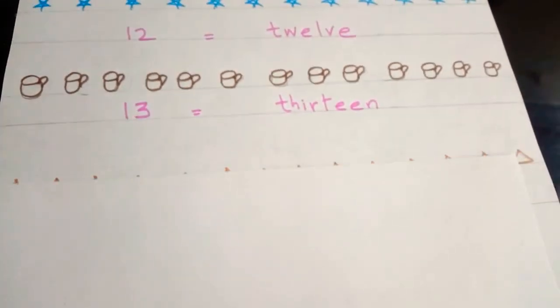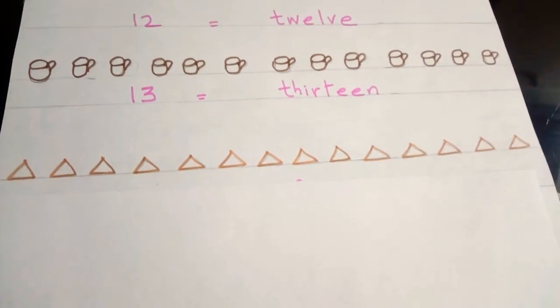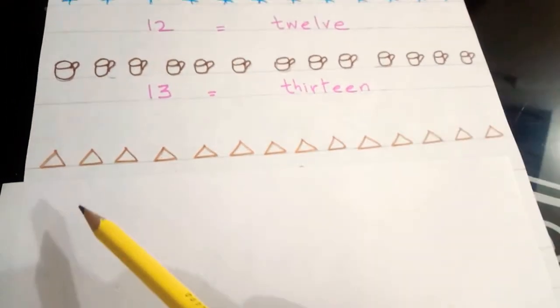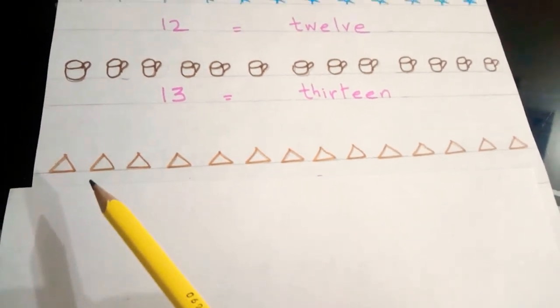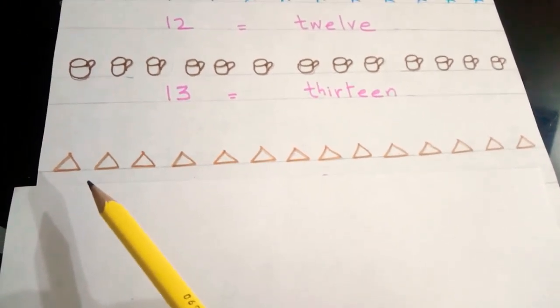Now, let's see what we have next. Okay, so which shape is this? Very good. These are triangles. So, let's count. How many triangles are these?